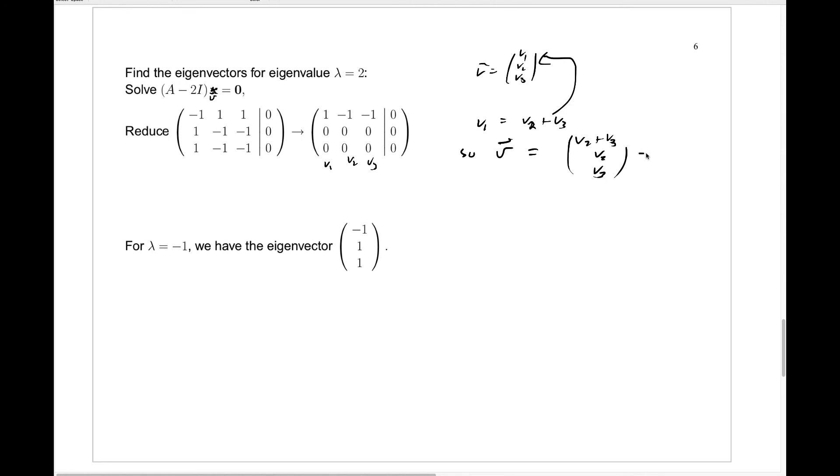And I can split this into v2 times—here's a v2 and there's a v2—so I have (1, 1, 0) plus v3 times (1, 0, 1). So that tells us that (1, 1, 0) and (1, 0, 1) are eigenvectors for eigenvalue 2 in this case.